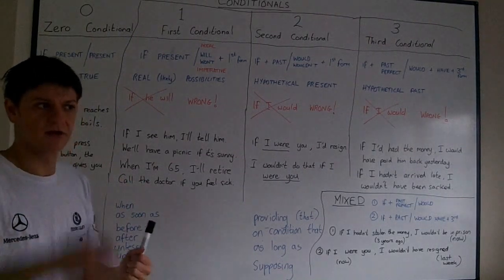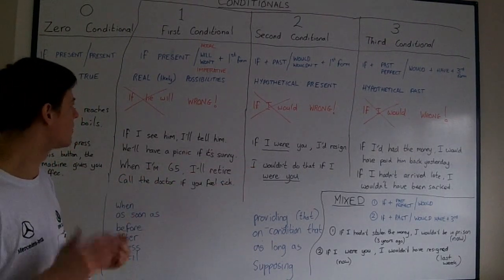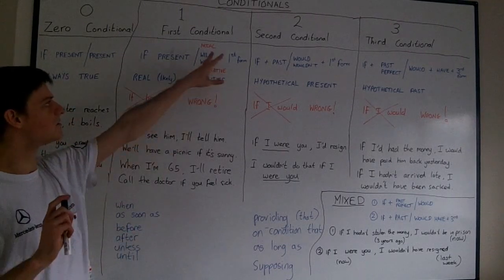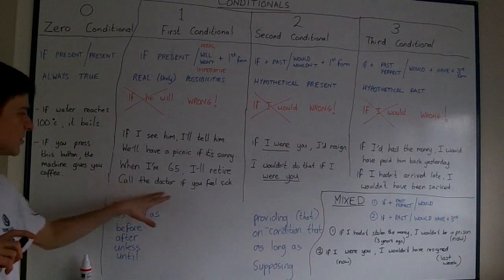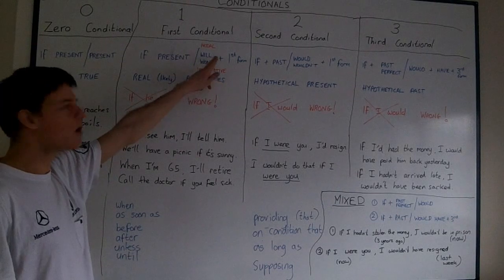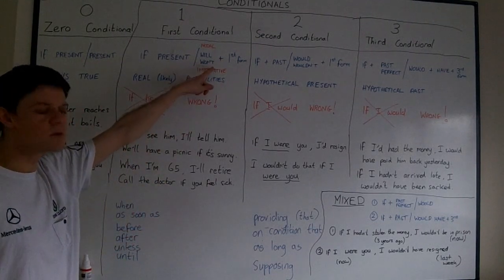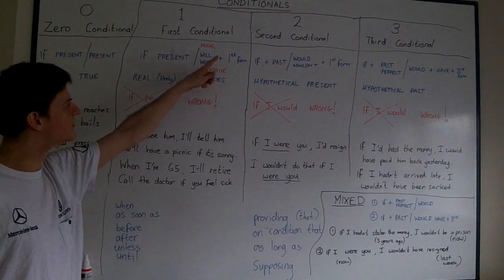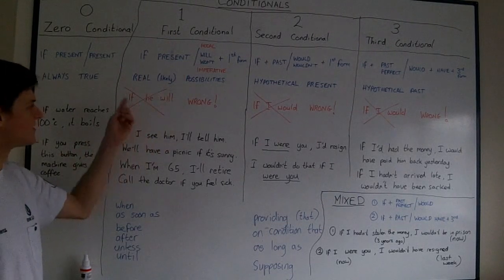And we can use an imperative instead of will or won't. Imperatives are orders, like go, stop, wait, come. These are all orders. So we can use those instead of will or won't. You'll see on my last example here, call the doctor if you feel sick. You could also use going to instead of will or won't. So really, perhaps it's better to say future here, instead of just will or won't.